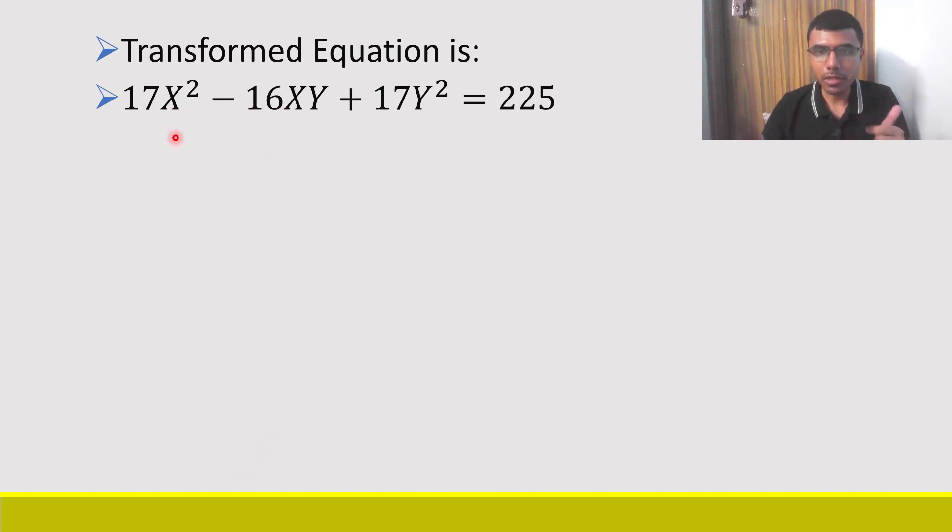One very important thing which you have to keep in mind is that when we write the transformed equation, we have to write it in capital X and capital Y. In the question it was given in small letters, but when I am doing it I'm going to write it in capital letters. Why? Because I want to differentiate what are the transform coordinates and what are the original coordinates. The transform coordinates need to be written in capital X and capital Y.